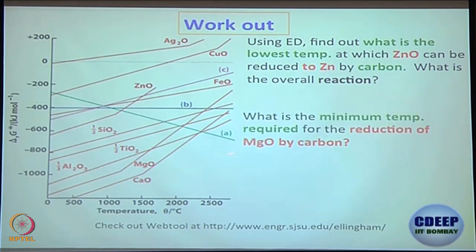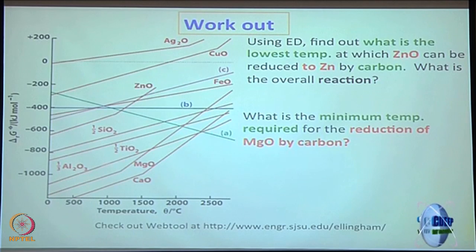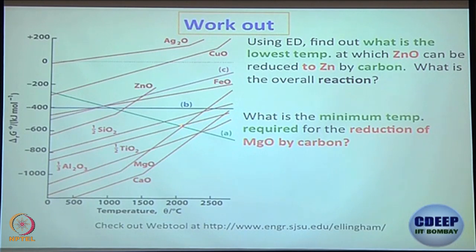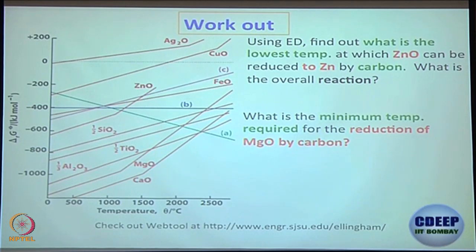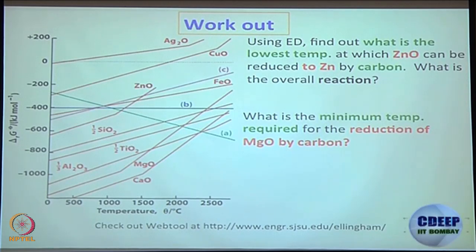What is the minimum temperature required for the reduction of magnesium oxide by carbon? More than 2000°C — this is the green curve, this is the magnesium oxide curve, and that is the intersection point, which is more than 2000, let us say 2150°C. At that point, carbon going to carbon monoxide formation is thermodynamically more favorable compared to magnesium going to magnesium oxide. So the net reaction will be magnesium oxide reacting with carbon giving you carbon monoxide, and magnesium oxide is converted to magnesium.